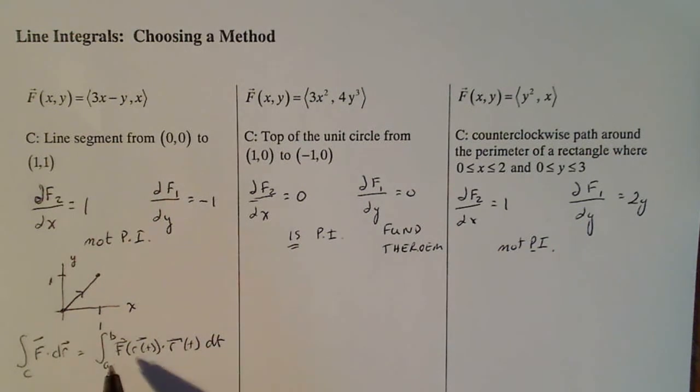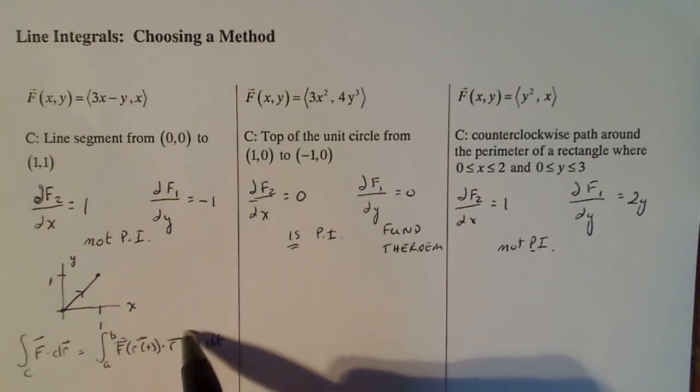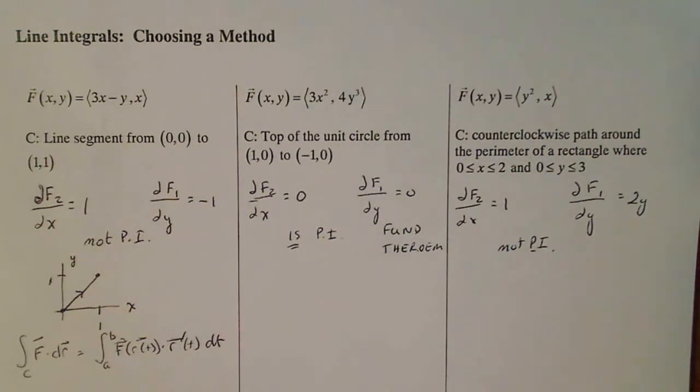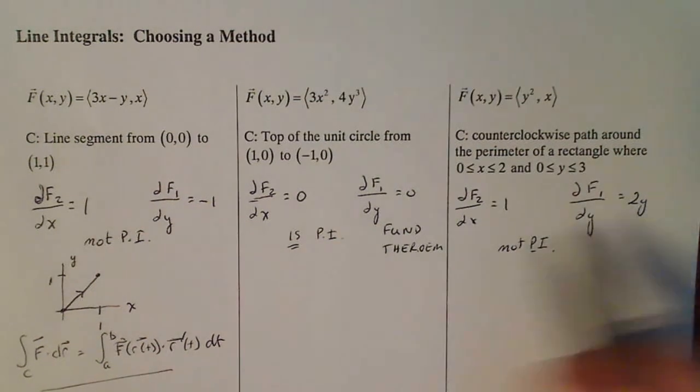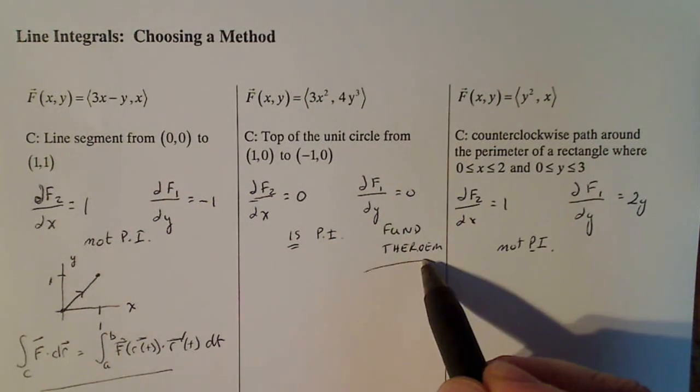And a and b is the interval for dt that creates the parameterized curve, r of t is the vector form of the parameterized curve and r prime of t is the velocity version of r of t. So here, this is the method we're going to use, we're going to use a fundamental theorem on this guy.